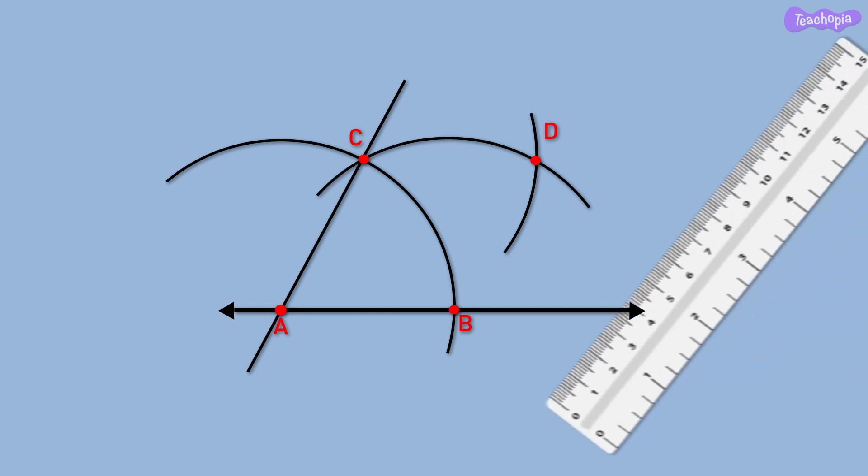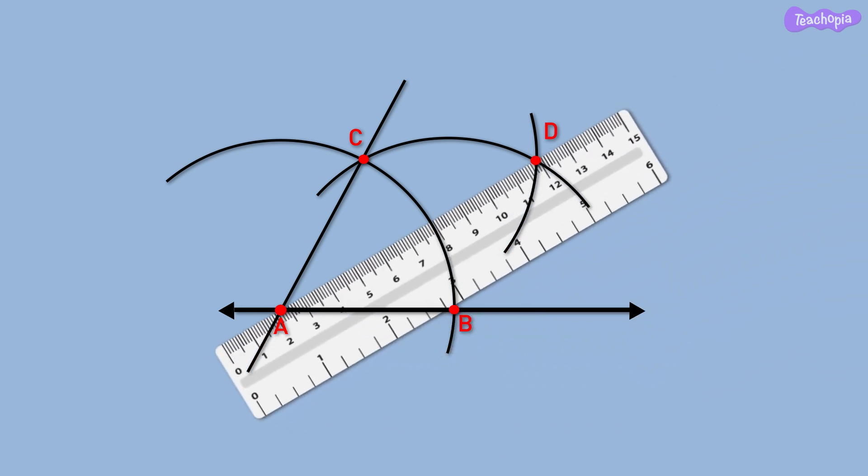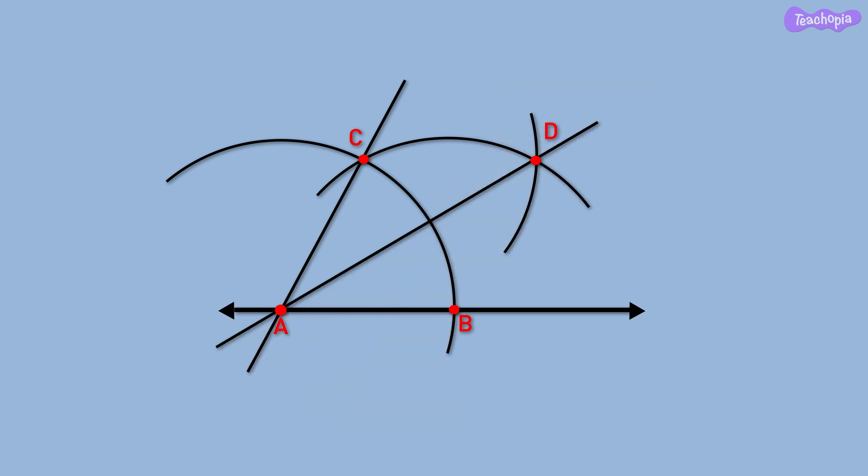Draw a line passing through points A and D. The line AD is the angular bisector of angle CAB — that is, AD divides angle CAB into two equal parts. Hence angle DAB is equal to angle DAC, and their measure will be 30 degrees. A protractor can be used to measure the angle.